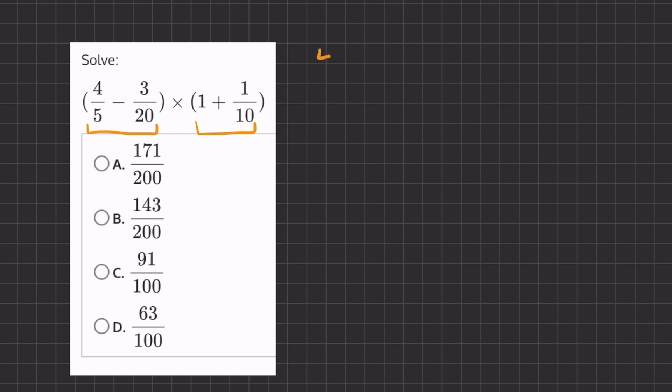So let's take this 4 over 5 minus 3 over 20, and in order to subtract fractions we have to turn our denominators into a least common denominator. So if we multiply 4 over 5 by 4, the numerator and denominator,